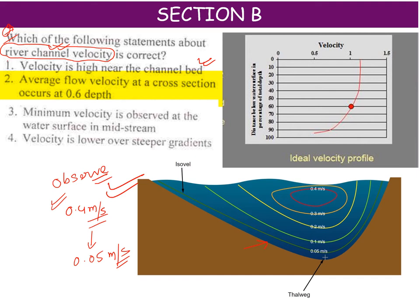The second statement says average flow velocity at a cross section occurs at 0.6 depth. If you consider the depth, the average velocity curve for an ideal river channel velocity profile lies around 60 cm depth. This is experimentally proved, so the answer is 0.6 depth — this statement is correct.